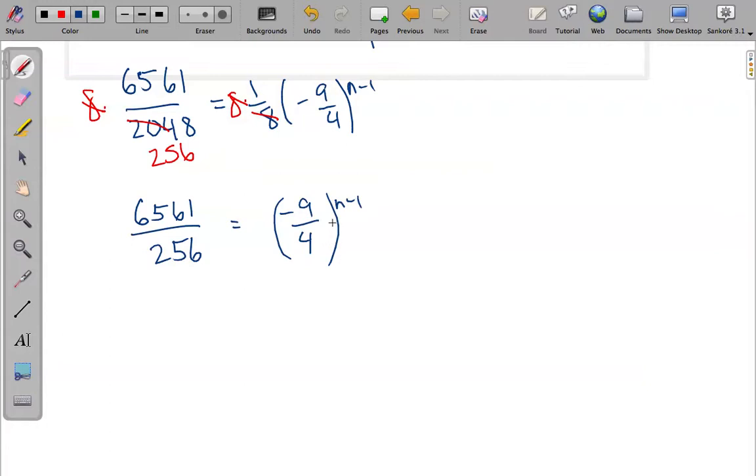Now at this point, I have several options available to me. I can take the logarithm of both sides, or I can recognize that this might work out quite nicely. Because I can say that this side is (-9)^(n-1), and make sure I put that in parentheses because that negative is part of the 9, over 4^(n-1), which is still 6561/256.